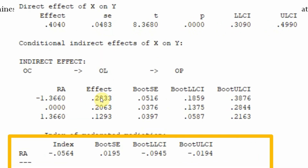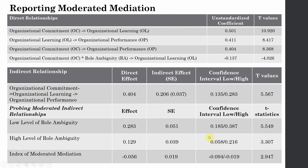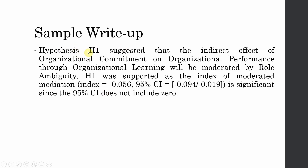At low level of role ambiguity, report the effect size, standard error, and lower and upper level confidence interval — dividing the effect by the standard error gives the T value. Present the same for high level of role ambiguity and the index of moderated mediation. For the write-up: Hypothesis H1 suggested that the indirect effect of organizational commitment on organizational performance through organizational learning would be moderated by role ambiguity. H1 was supported, as the index of moderated mediation was significant with a 95% confidence interval not including zero.